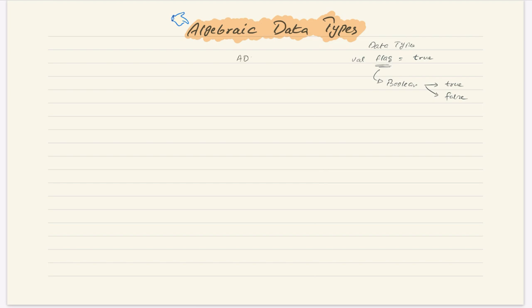What is meant by algebraic data types? This is abbreviated as ADTs. The 'A' is sometimes found as 'abstract' and sometimes as 'algebraic'. From 'abstract', this is an object-oriented term used for abstraction — for example, when we talk about a sequence it's an abstract type of all collections. That has no connection with algebraic data types. So what is meant by 'algebraic'? When we say some data type is algebraic, it means that this data type is going to obey some well-defined mathematical properties, so we call them algebraic data types.